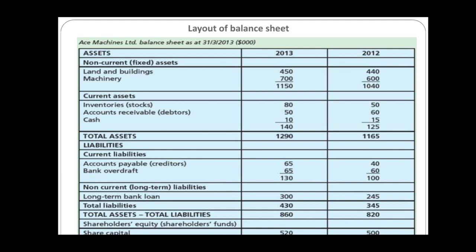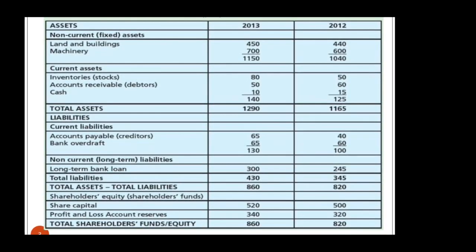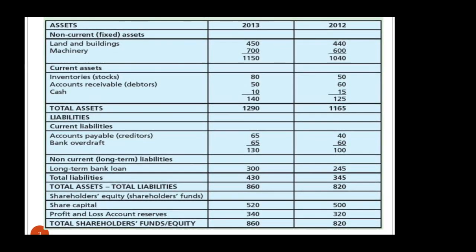This gives us total assets. On the liability side, current liabilities are what the business owes within a short period of time — like accounts payable and bank overdraft. Bank overdraft is the facility arranged with the bank to take more than you have in your account; it's a short-term finance. Accounts payable, or creditors, is the opposite of accounts receivable — it's the money owed to suppliers for goods bought on credit.